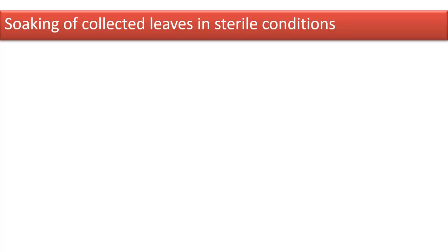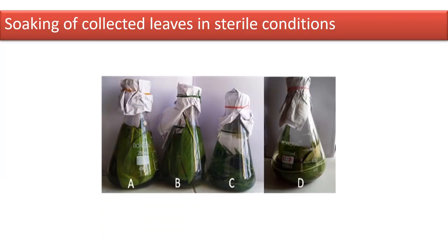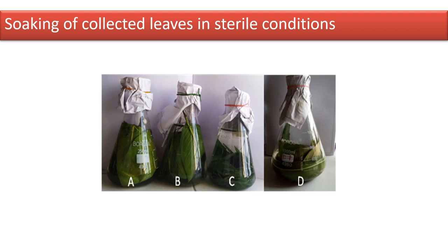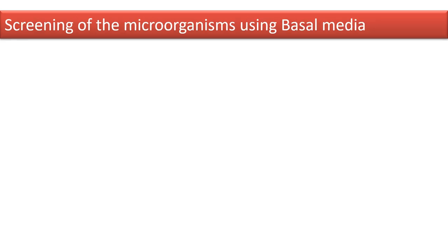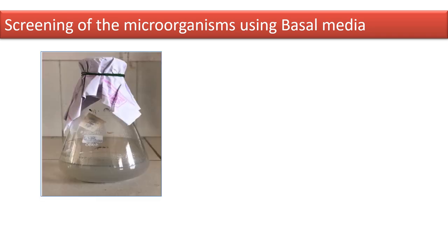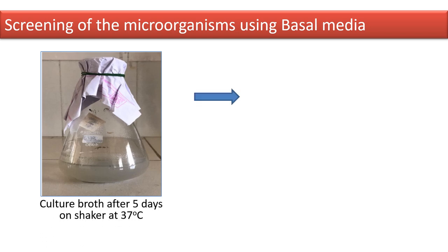The procedure began with collection of leaves from the surrounding environment in a sterile manner, and they were soaked in sterile distilled water for 3 to 5 days. After the soaking procedure, 2 ml of each sample water was mixed and aseptically transferred to basal media for growth of microorganisms. After 5 days, the culture broth was obtained.